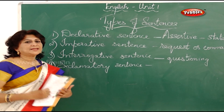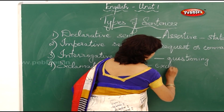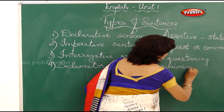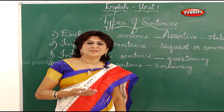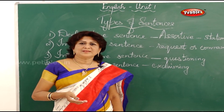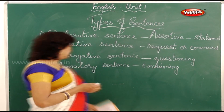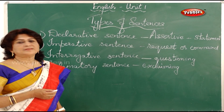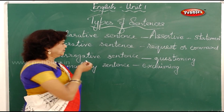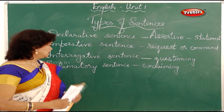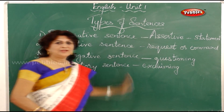Next is the exclamatory sentence — exclaiming. For example, 'what a beautiful flower the rose is' or 'how beautiful the weather is.' Whenever a sentence ends with an exclamatory mark it is an exclamatory sentence, and whenever a sentence ends with a question mark it is an interrogative sentence.